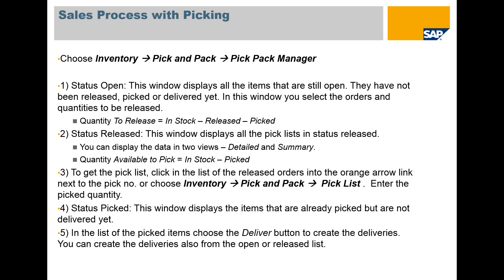The Pick and Pack Manager has a number of areas. The first one is Status. With status set to Open, the window will display all the items that are still open — that is, they have not been selected for picking, released, picked, or delivered. In this window, you select the orders and quantities to be released. The quantity to release is equal to the stock minus what's already released minus what's picked.